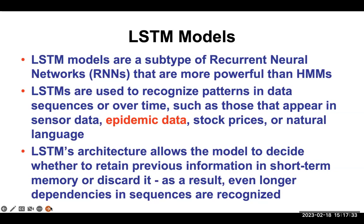LSTMs are more powerful than hidden Markov models or probabilistic graphical models. They're used to recognize patterns over sequences over time — you can see this in sensor data, DNA sequence data, stock prices, natural language, and most importantly in epidemic or time course epidemic data. LSTMs allow the model to decide whether to retain previous information in the short term or to discard it, and because they can do both short and long term, they're able to recognize longer, more complex sequences than simpler HMMs.